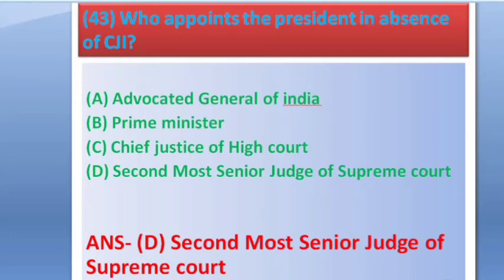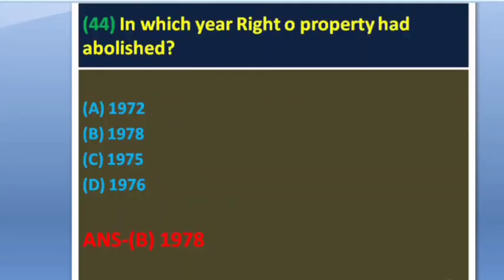Question 44: In which year was the right to property abolished? Options: 1972, 1978, 1975, 1976. The answer is option B — 1978.